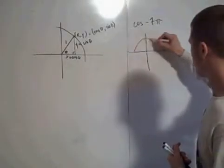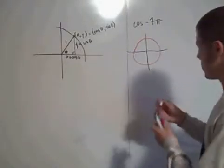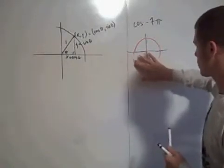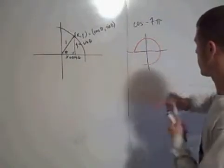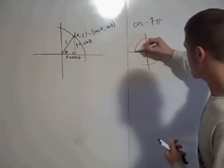I'll draw it right here. So think about a unit circle. And find out where negative 7π is.